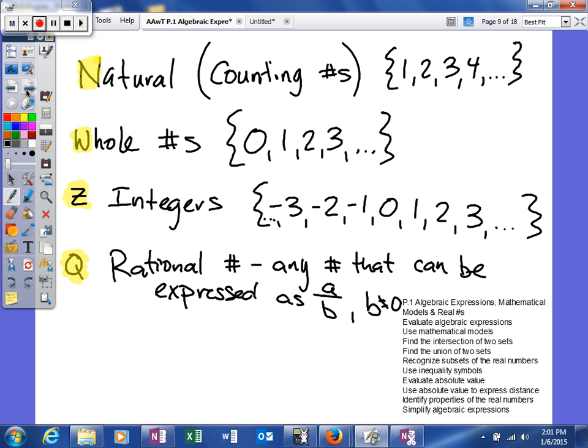But then you also have certain things like decimals that end. So 0.25, that's actually a rational number because it's the fraction 1 fourth. Any decimal that ends or repeats can be represented as a rational number. Any decimal that ends or repeats can be written as a rational number. Some numbers can actually be written as a fraction. So decimals that do not end or do not repeat will not fall in this category.